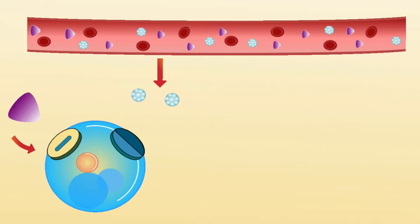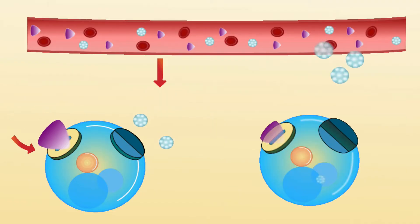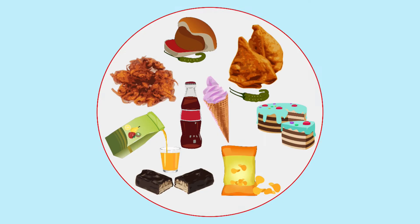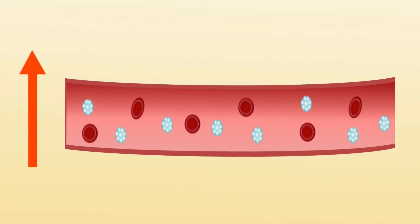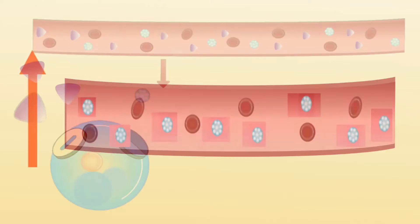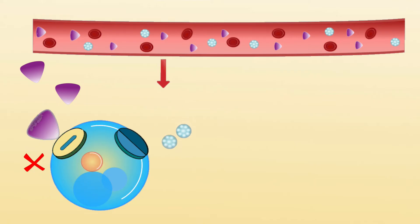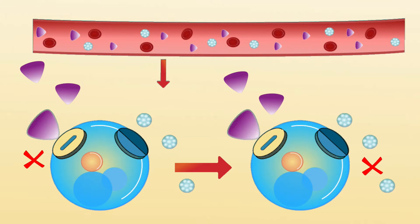Insulin is a very important hormone. It helps in taking up the glucose from the blood into the cells. Frequently having processed foods and foods rich in carbohydrates is not good. It results in more glucose in our blood. Insulin's action is resisted by the cells if they do not need this glucose, thus refusing the entry of glucose into the cells.